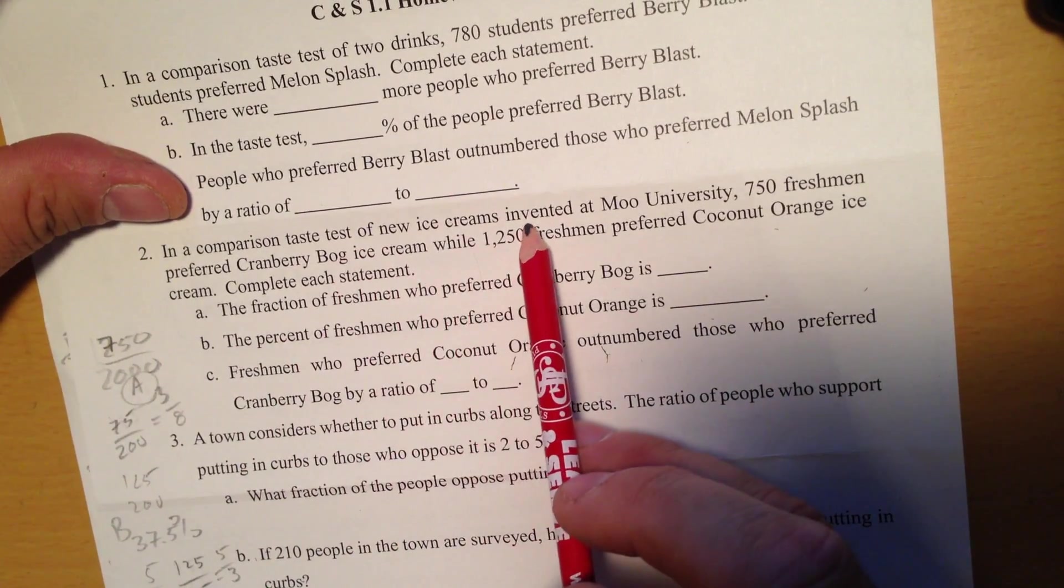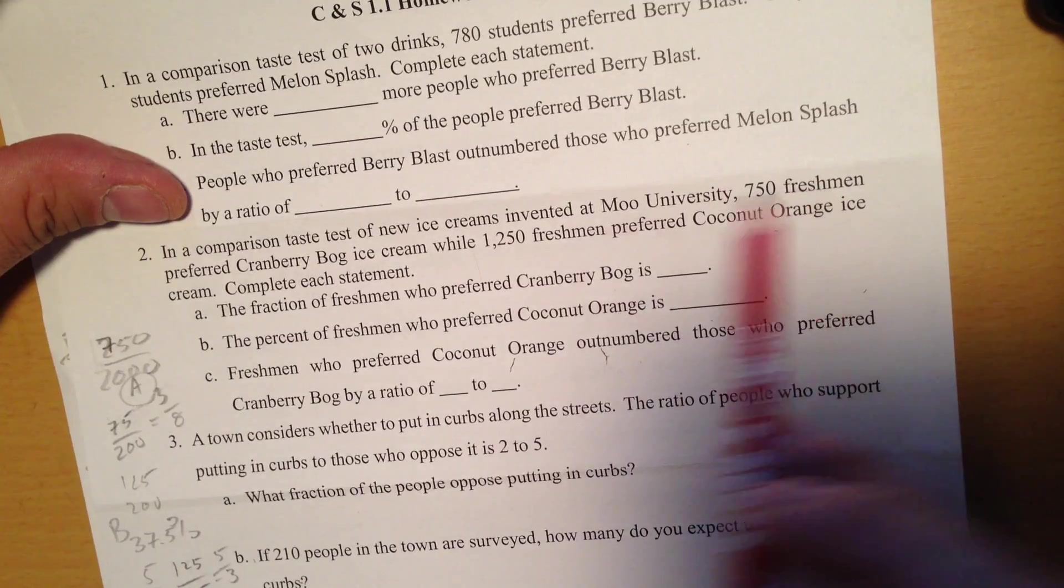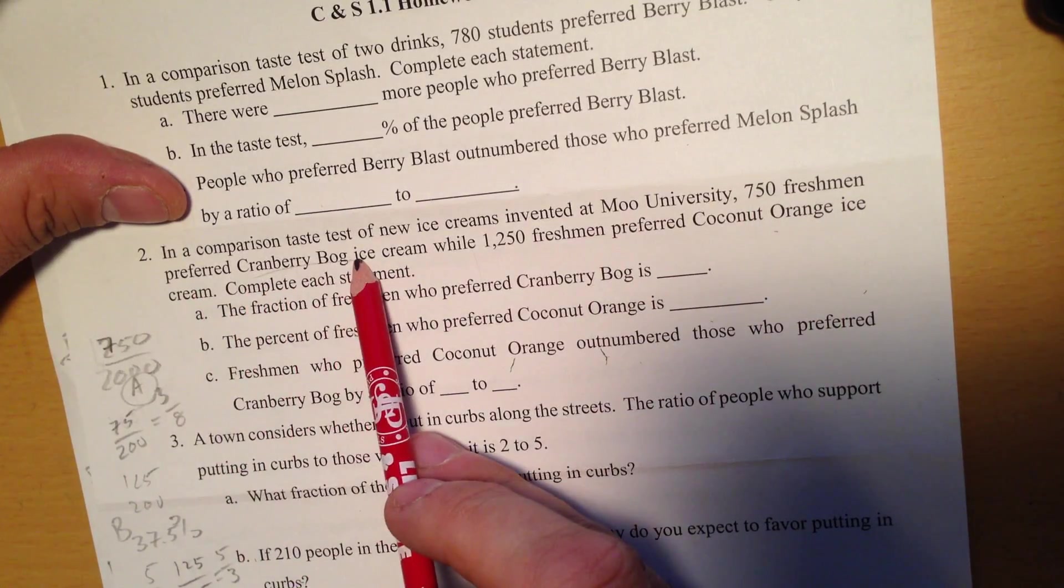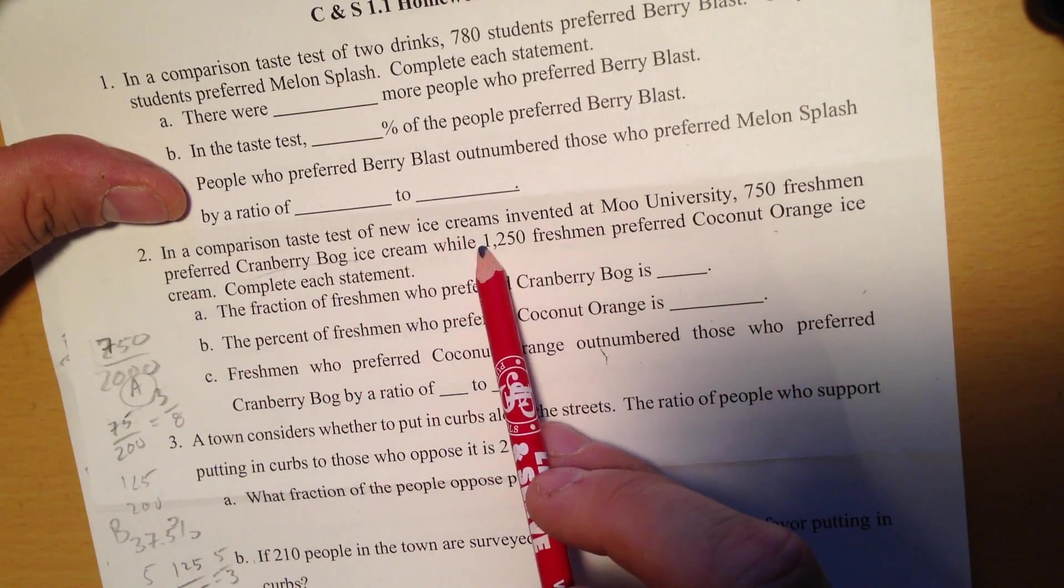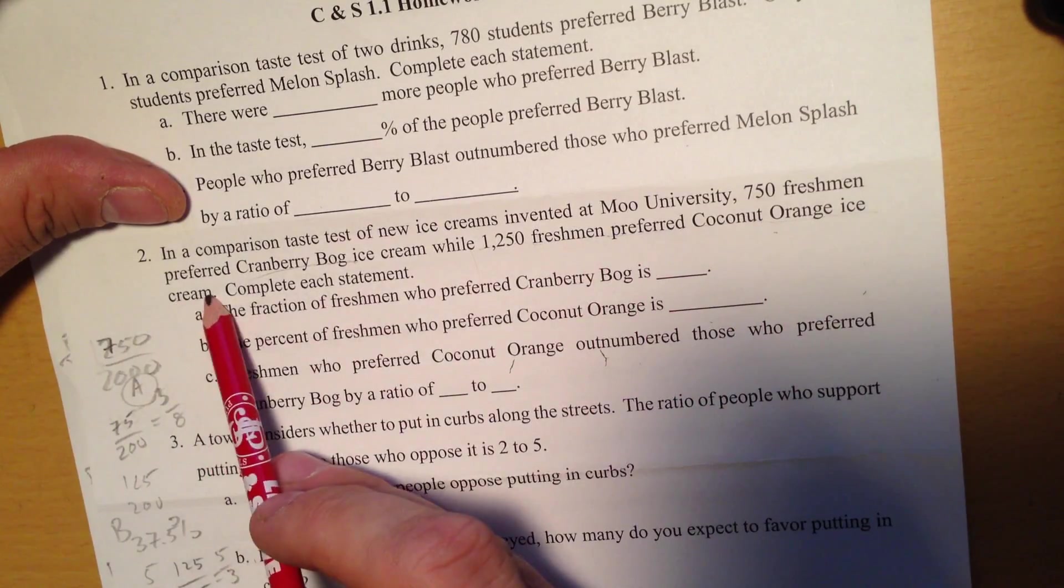So a company did a taste test on new ice creams they invented at Moo University. 750 freshmen preferred cranberry bog ice cream while 1,250 freshmen preferred coconut orange ice cream.